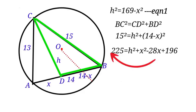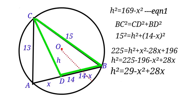Let us move the numbers on this side to the other side of the equation. We will have H squared equals 225 minus 196 minus X squared plus 28X. So H squared will equal 29 minus X squared plus 28X. Let us call that equation 2.